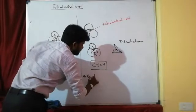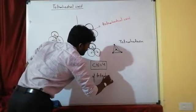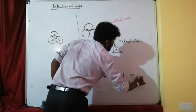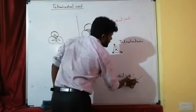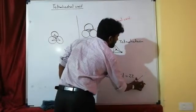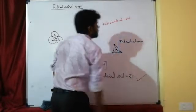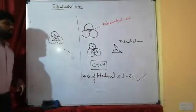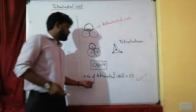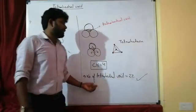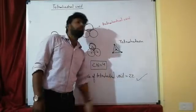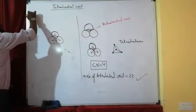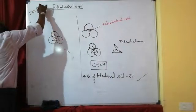The number of tetrahedral voids in a unit cell is 2Z, where Z is the number of atoms. So the formula is: Number of tetrahedral voids = 2 × Z. In the next video, I am going to prove this formula using the FCC unit cell, also known as the CCP unit cell.